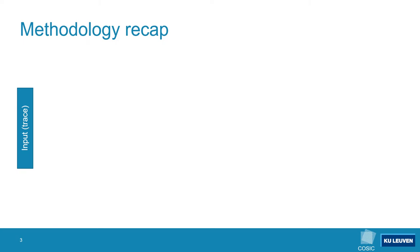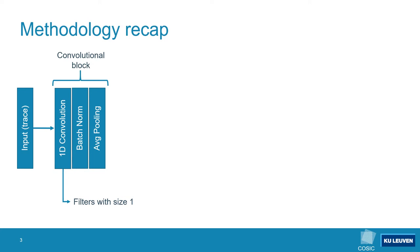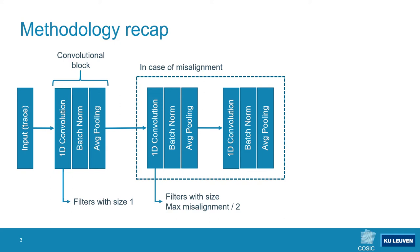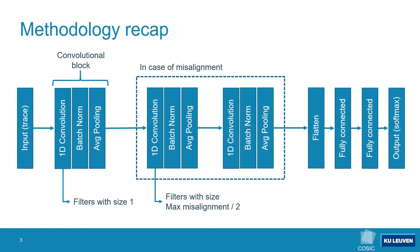As with any convolutional neural network, this network starts at the input. In our application, the inputs are samples from a side-channel measurement. The convolutional neural network consists of convolutional blocks. Each block contains a 1D convolution, a batch normalization layer, and an average pooling layer. The first convolutional block uses filters with a size of 1 — an unconventional choice we will explore in more detail. Another convolutional block is added in the case of a misaligned dataset, where the filter size is said to be half of the maximum misalignment present in the dataset. Another convolutional block can be added to reduce the dimensionality. Finally, a flattened layer is followed by one or more fully connected layers, followed by the output classification layer.